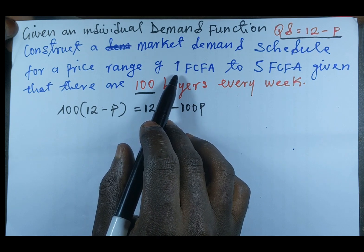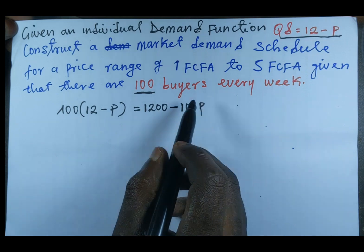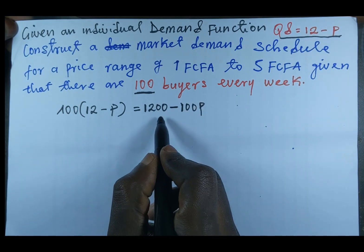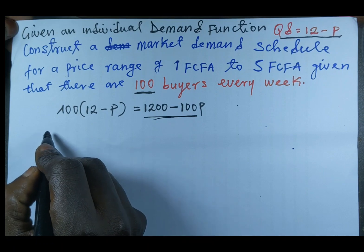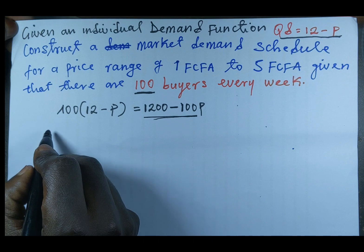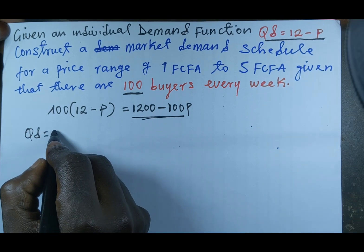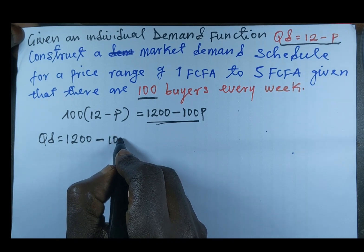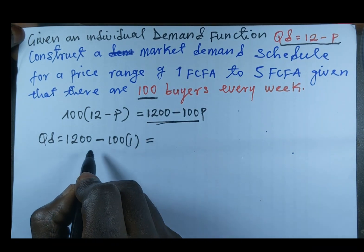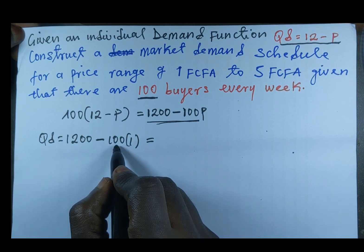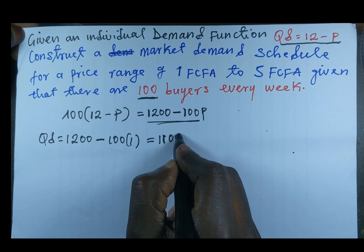We should construct the market demand schedule for a price range of 1 FCFA to 5 FCFA, so we substitute into the market demand function. When price is 1 FCFA, quantity demanded equals 1200 minus 100 × 1 = 1200 − 100 = 1100.